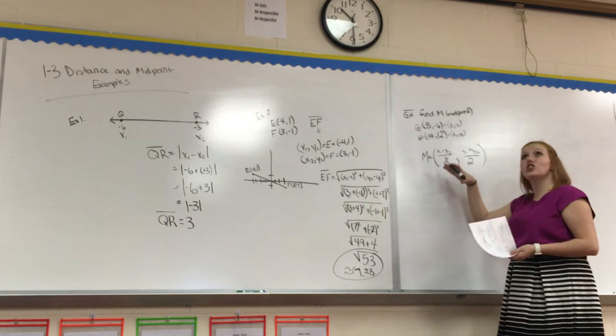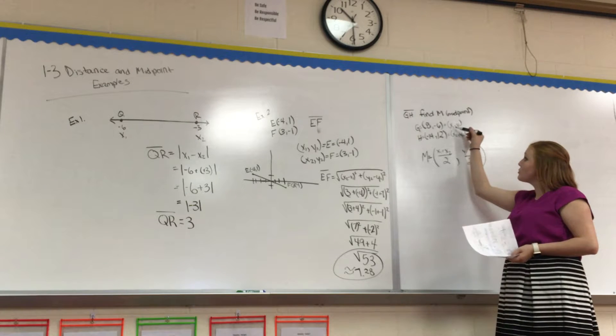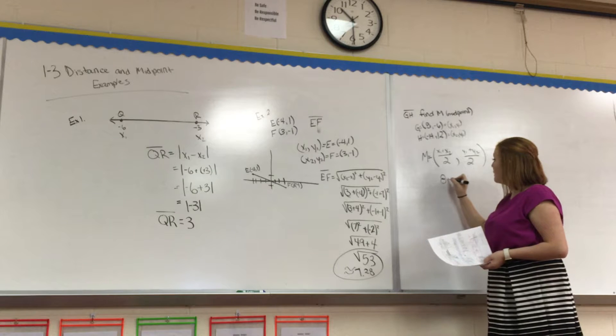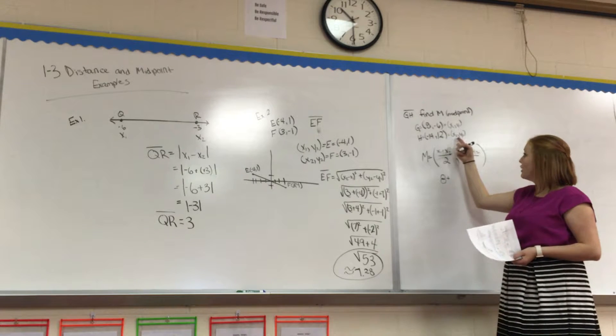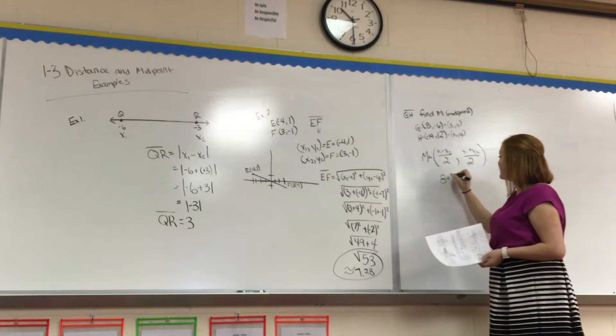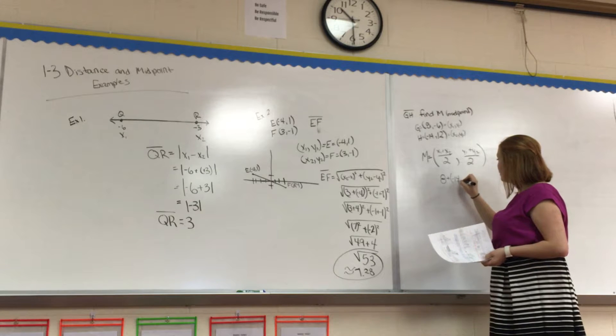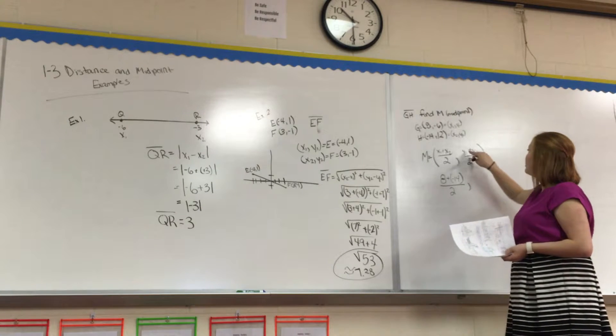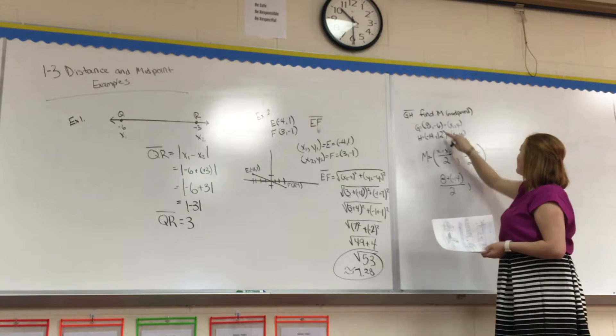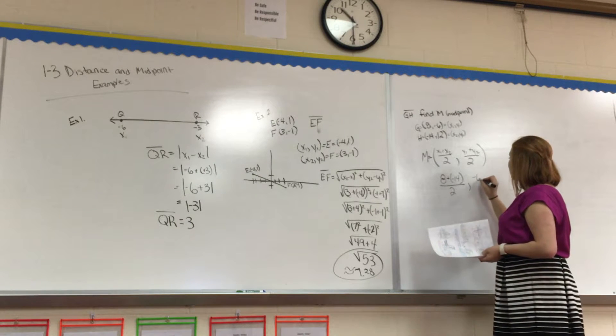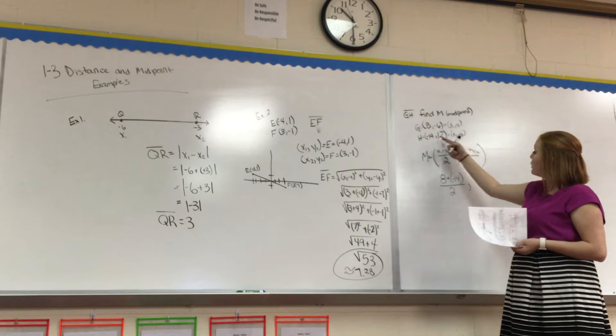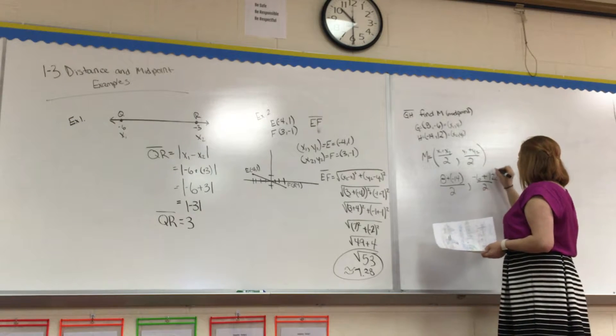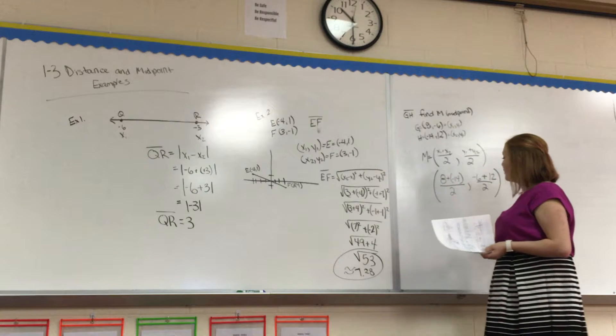So now I have to plug and chug. So, X1, what's X1? X1's up here, so we have an 8, plus what's X2? We have X2 down there. That's a negative 14, divided by 2, comma, what's Y1? Well, you get Y1 up here as a negative 6, plus what's Y2? We get Y2 down there. It's a 12 all over 2. Keep that in our ordered pair parentheses.